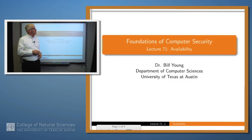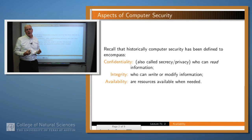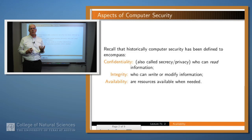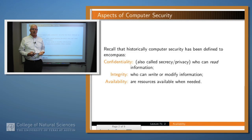Hello again. You'll remember that very early on in this series of lectures, we said that there were three topics which were considered to be the big three of computer security: confidentiality, integrity, and availability. We've talked at some length about confidentiality and integrity. Let's talk a little bit about availability.